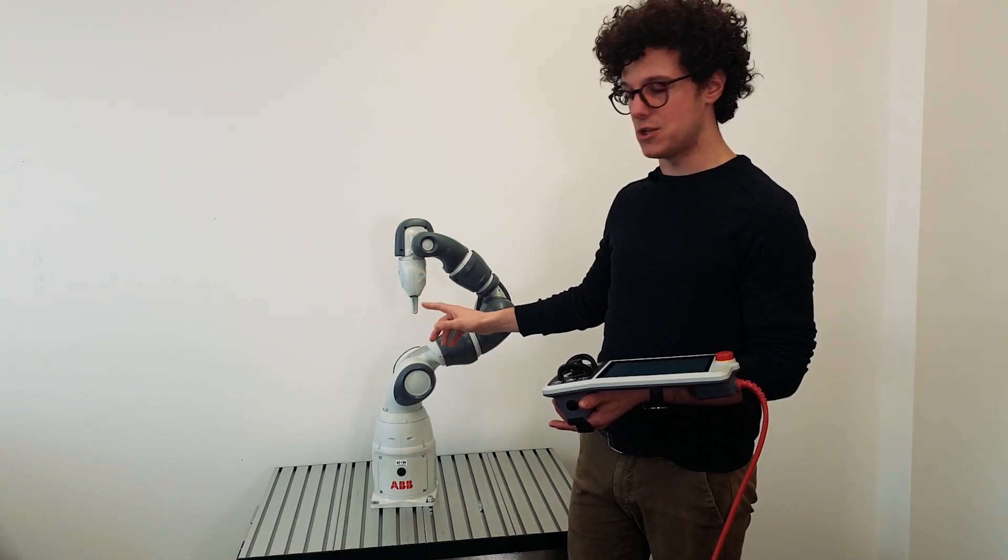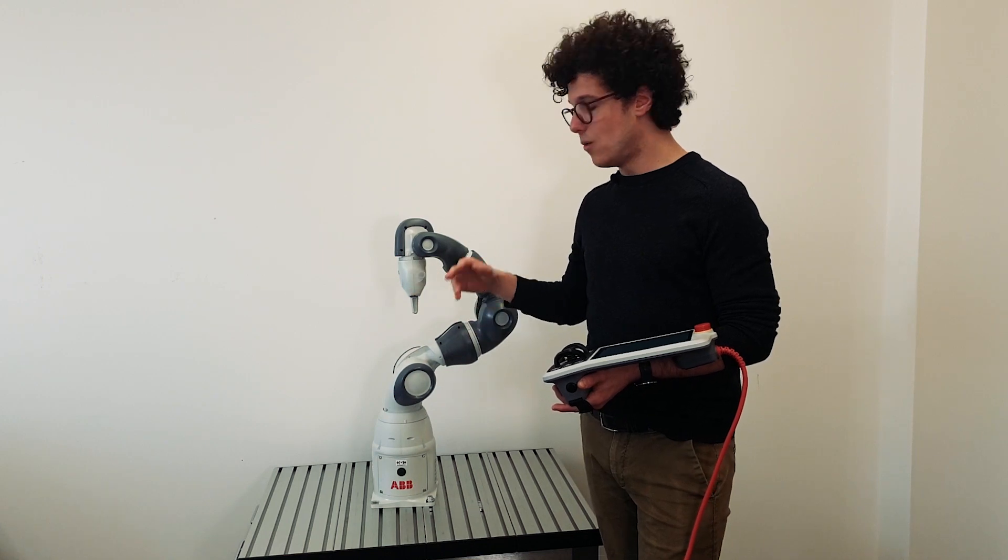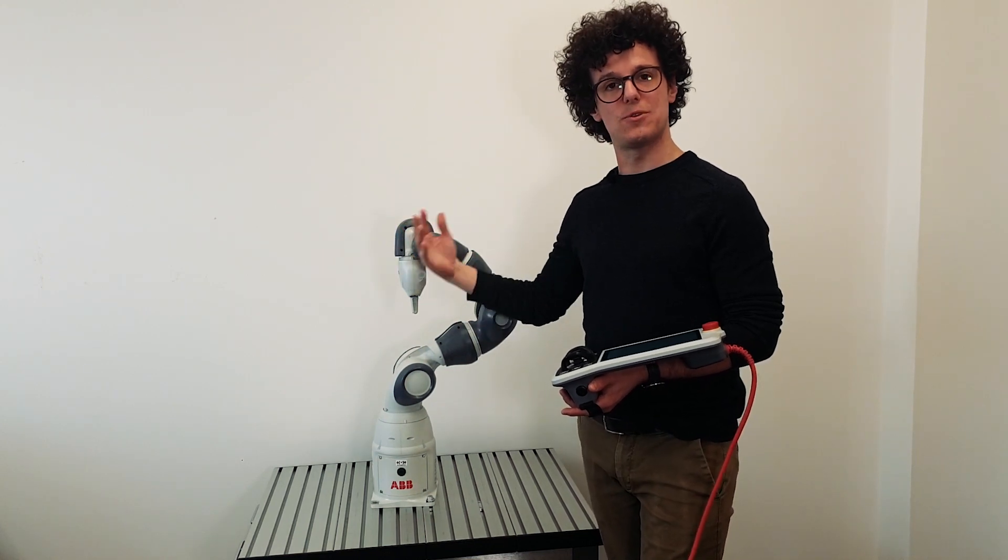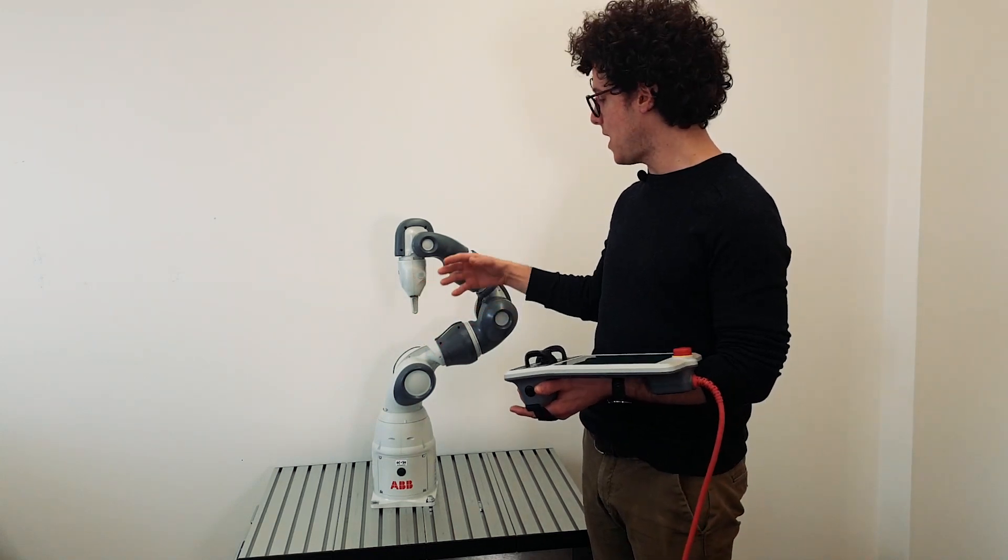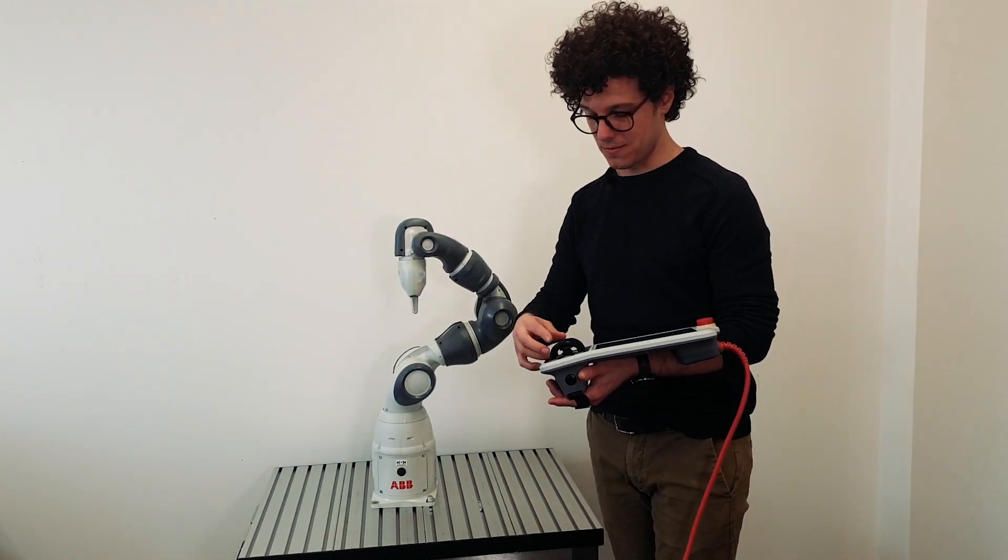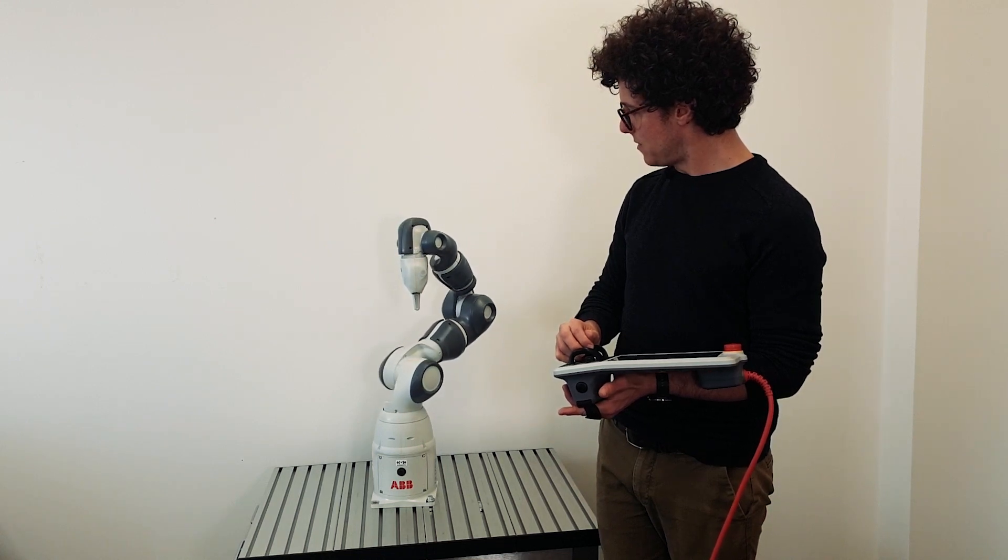In this particular type of singularity, if you try to move from this position, you will notice that robot joints 1 and 4 will start to rotate very fast in opposite directions, while the TCP will remain almost still, causing a very inefficient robot motion. Now you can see this effect.